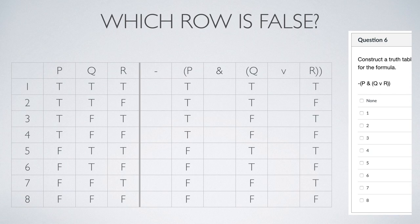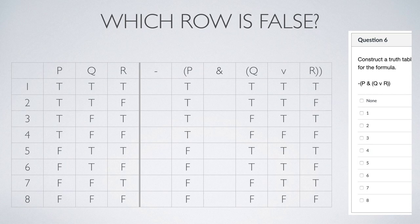We have two sets of parentheses — work from the innermost outward. Overall this proposition is a negation, so keep that in mind. For the innermost parentheses, it's a disjunction q or r. Don't try to evaluate both columns simultaneously — stick with q first. We know a disjunction is true if at least one disjunct is true, so look for the t's: they're grouped in rows one and two, and rows five and six. Then look at r and find the t's there. The remaining rows are false.